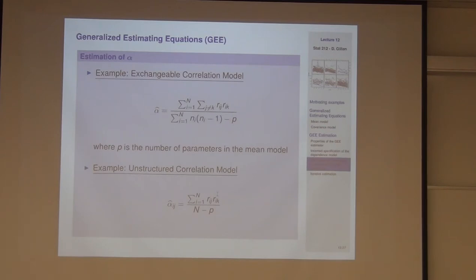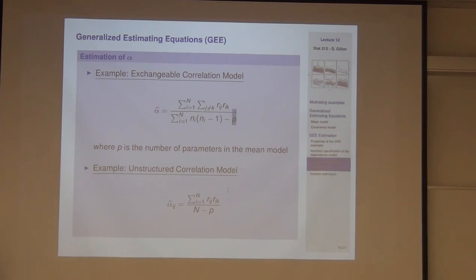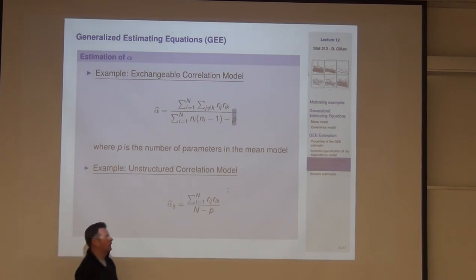For exchangeable correlation, you take pairwise products of residuals within each cluster and average over all clusters, dividing by n_i(n_i - 1) per cluster and summing, with a bias correction p (the number of parameters in the mean model) removed from the denominator. For an unstructured correlation model, alpha-hat_{jk} takes the j,k residual product on each cluster averaged over all clusters — borrowing information by assuming stationarity within clusters.